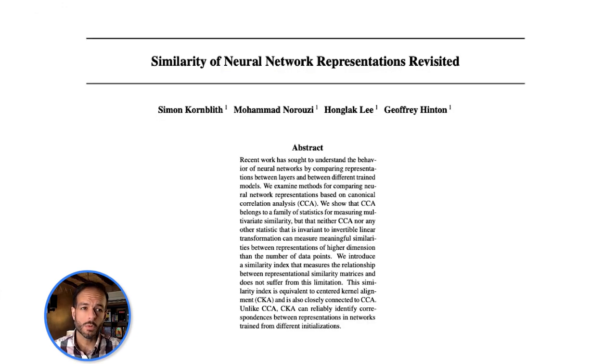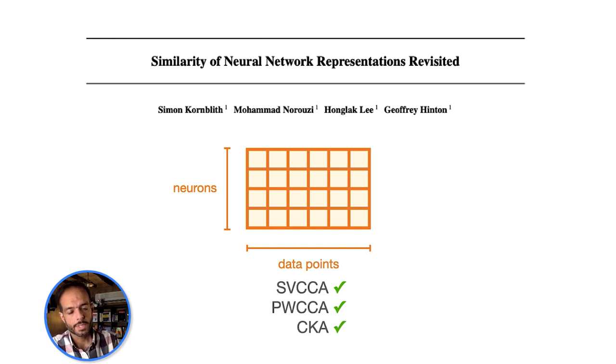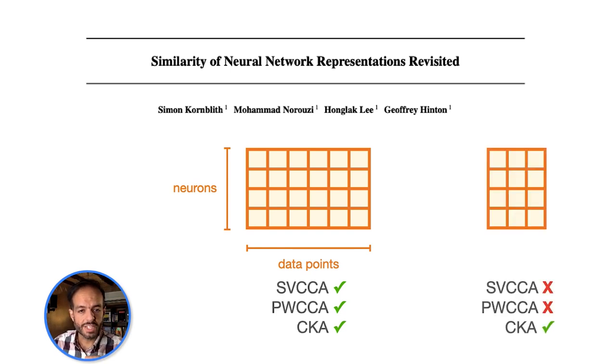More recently, a lot more work started using CKA, Centered Kernel Alignment, as a metric for similarity between activation matrices. The reason for this is that when you have more data points than neurons, you can use SVCCA and PWCCA, so if you have a wide activation matrix. But neither SVCCA or PWCCA would work if you have more neurons than data points. CKA is the only one of these methods that would work in a case like this.